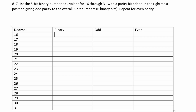We're going to start with the binary number for 16. To find 16, we use the binary positions 2 to the 4th, 2 to the 3rd, 2 to the 2nd, 2 to the 1st, and 2 to the 0th. All of the lower positions are going to be 0, because 2 to the 4th equals 16. So when we write the binary equivalent, it's just going to be 1 0 0 0 0.